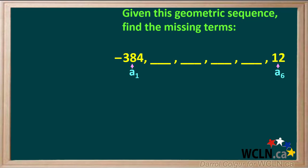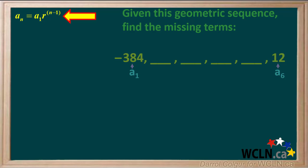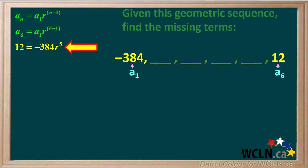We'll identify negative 384 as term 1 and 12 as term 6. We'll use the equation for the nth term of a geometric sequence and the information given to find the common ratio r. We'll set the term number n as term 6. Term a6 is 12, term a1 is negative 384, and the exponent 6 minus 1 is equal to 5.